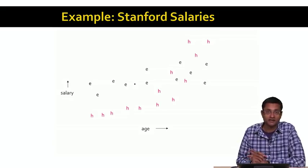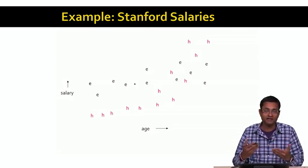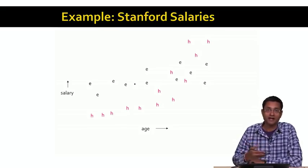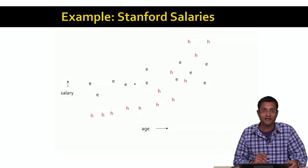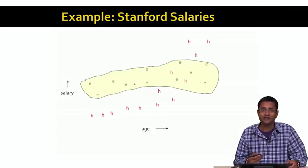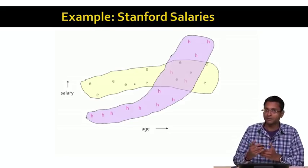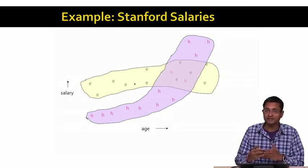Presumably this is because in engineering departments, fields keep changing so much that there is a lot of value in bringing in new faculty with new interests and new expertise. Whereas in the humanities, you age better as you age. So if you look at these two sets of salaries and try to cluster them, what you really want in an ideal world is two clusters — one for engineering salaries and one for humanities salaries — cleanly separating these two data points into two separate clusters.